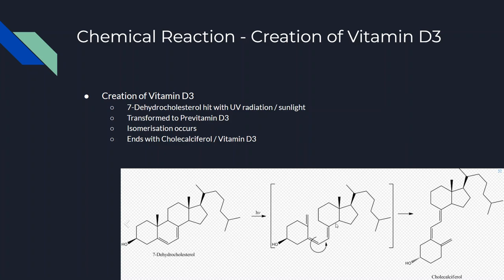Then isomerization occurs, which is the restructuring of the molecule or the atoms in the molecule. So all the stuff that's right here is the same as right here. It just changes itself or the way that it's shaped. And then the pre-vitamin D3 ends as cholecalciferol, also known as vitamin D3.